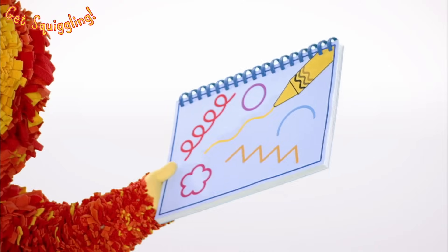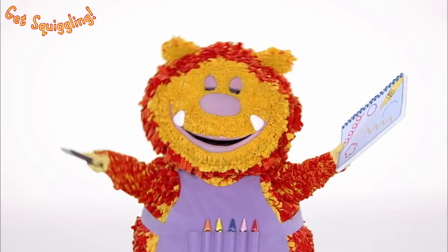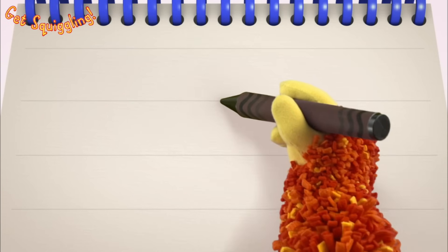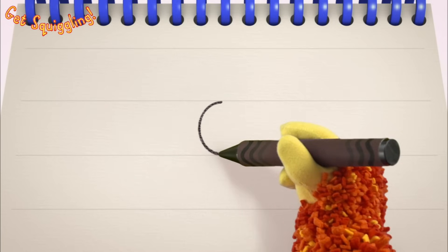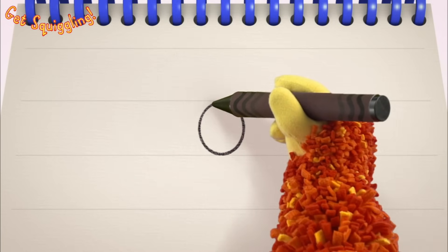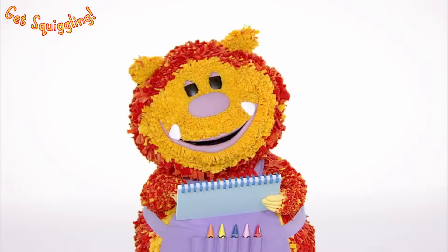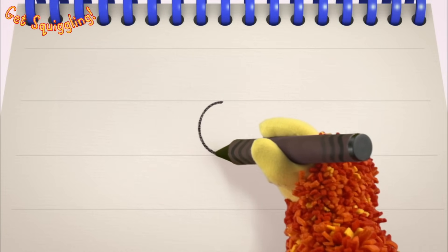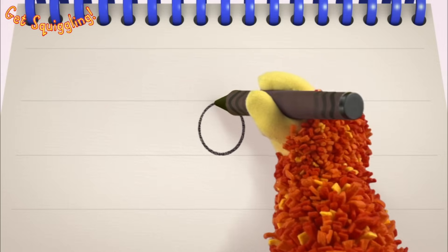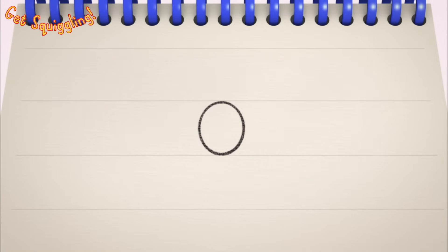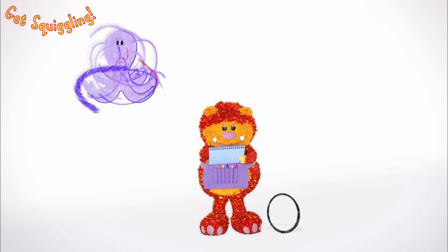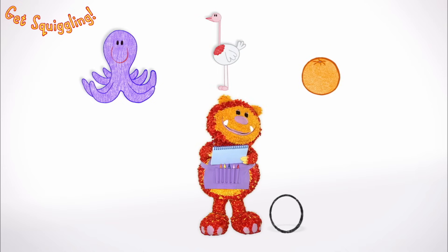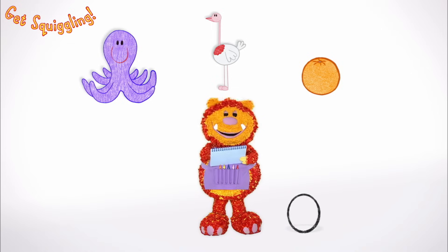Have you got your squiggle pads and squiggle sticks ready? Let's get squiggling! Holding your squiggle stick like this, move it round, round and join — the letter O. Let's squiggle it again: go round, round and join — the letter O. Shall we squiggle some things that start with the letter O? An octopus, an ostrich and an orange — they all begin with the letter O.